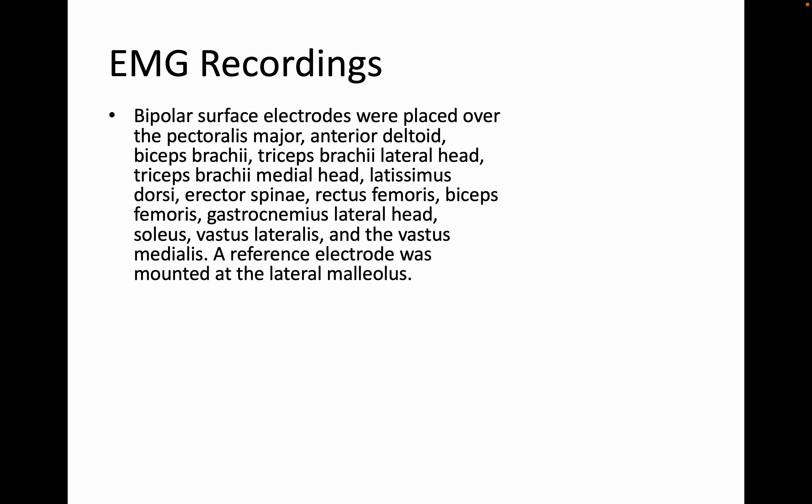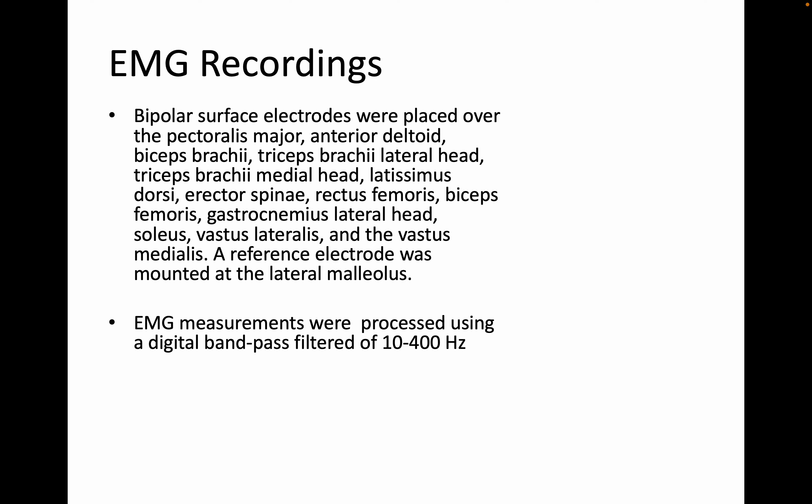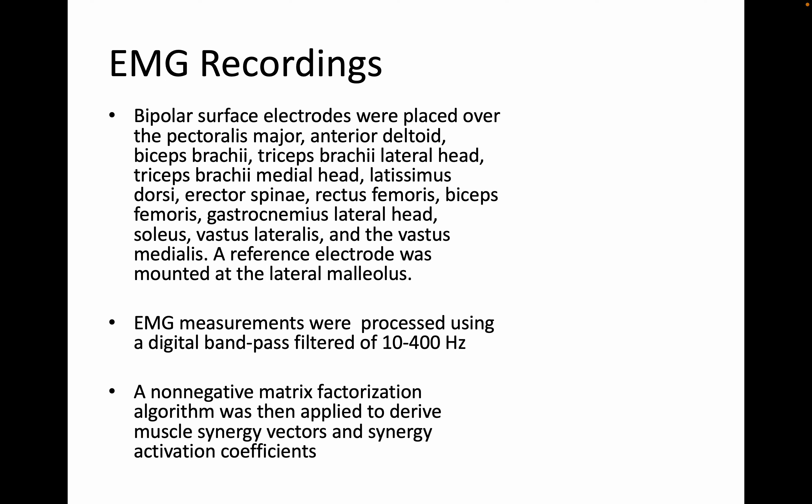The recordings were taken with bipolar surface electrodes placed across the body — typical upper extremity muscles, but also trunk muscles like the erector spinae and latissimus dorsi, and lower body muscles like the rectus femoris and biceps femoris. A reference electrode was mounted at the lateral malleolus. Measurements were processed using a digital bandpass filter at 10 to 400 Hz, and the real insight came from using a non-negative matrix factorization algorithm to derive the muscle synergy components.